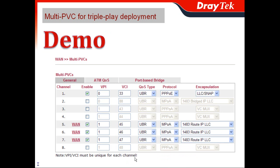Let's see how we do it. Go to WAN and choose multi-PVC, and you can see there is a place for you to plug in the different VPI and VCI values for the four kinds of services. You can also configure the QoS type, protocol, and encapsulation. All these values and choices need to follow the ISP instructions.